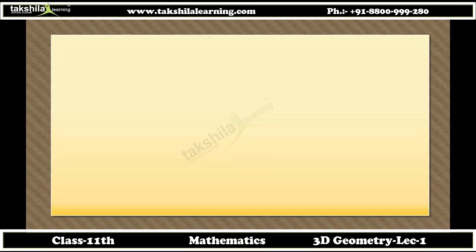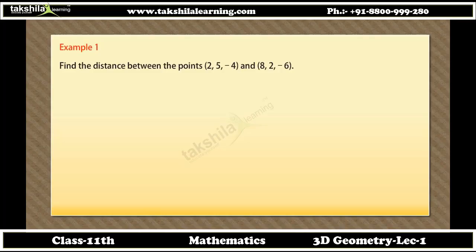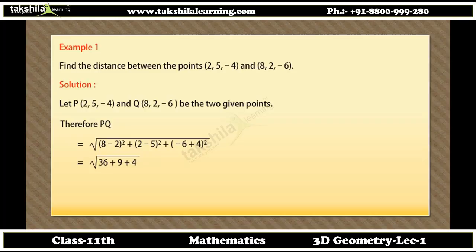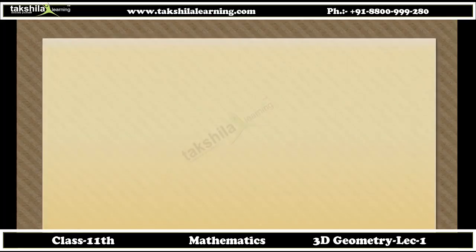Example 1: Find the distance between the points (2, 5, −4) and (8, 2, −6). Solution: Let P = (2, 5, −4) and Q = (8, 2, −6) be the two given points. Therefore, PQ = √[(8 − 2)² + (2 − 5)² + (−6 + 4)²] = √[36 + 9 + 4] = √49 = 7.